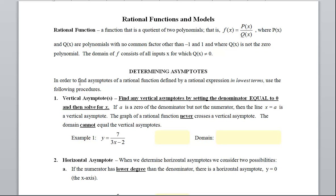So the first type of asymptote we need to look at is what's called a vertical. A vertical is up and down. So I might have more than one. But now here's the bottom line. To find any vertical asymptotes, set the denominator equal to zero, and then solve for x. If whatever I find is a zero of the denominator, but not the numerator, then the line x equals a is a vertical asymptote. The graph of a rational function will never ever cross a vertical asymptote.